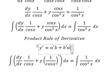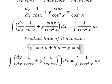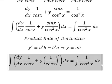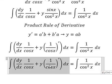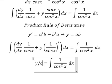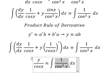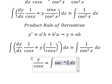So the integration of this one, we have y equals ab. So the integration of that one, we have y over cosine x. This is sec squared x.